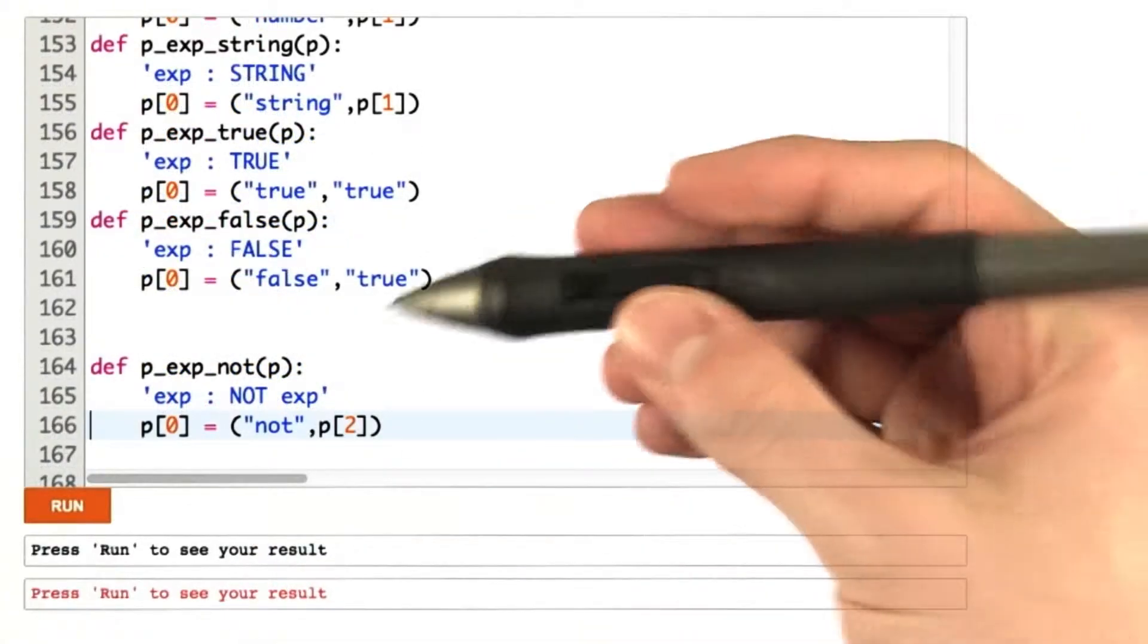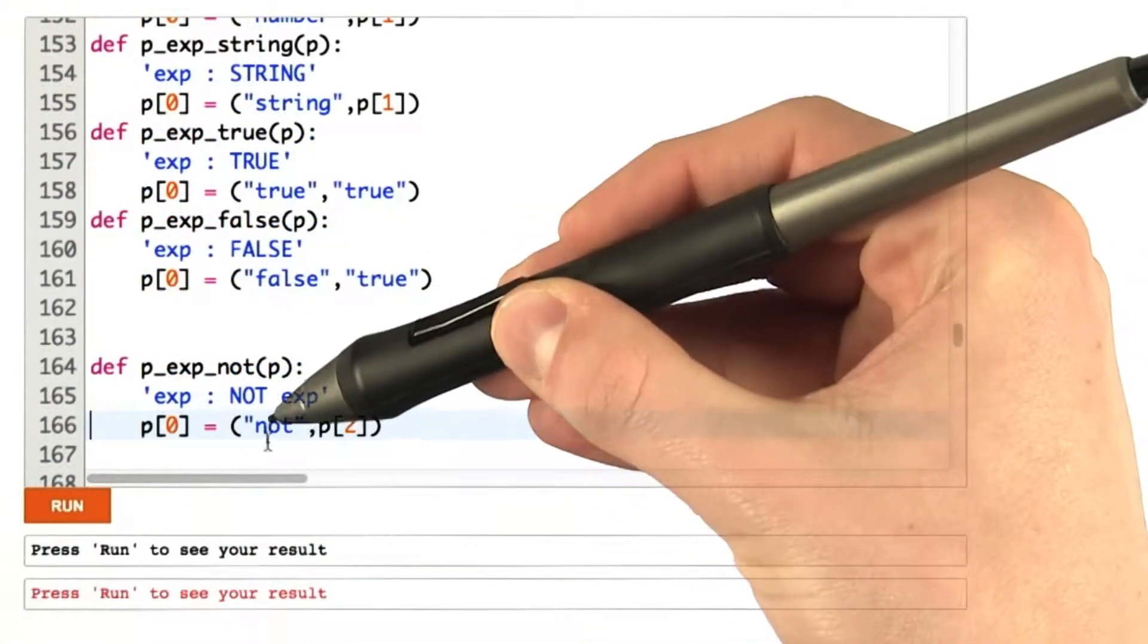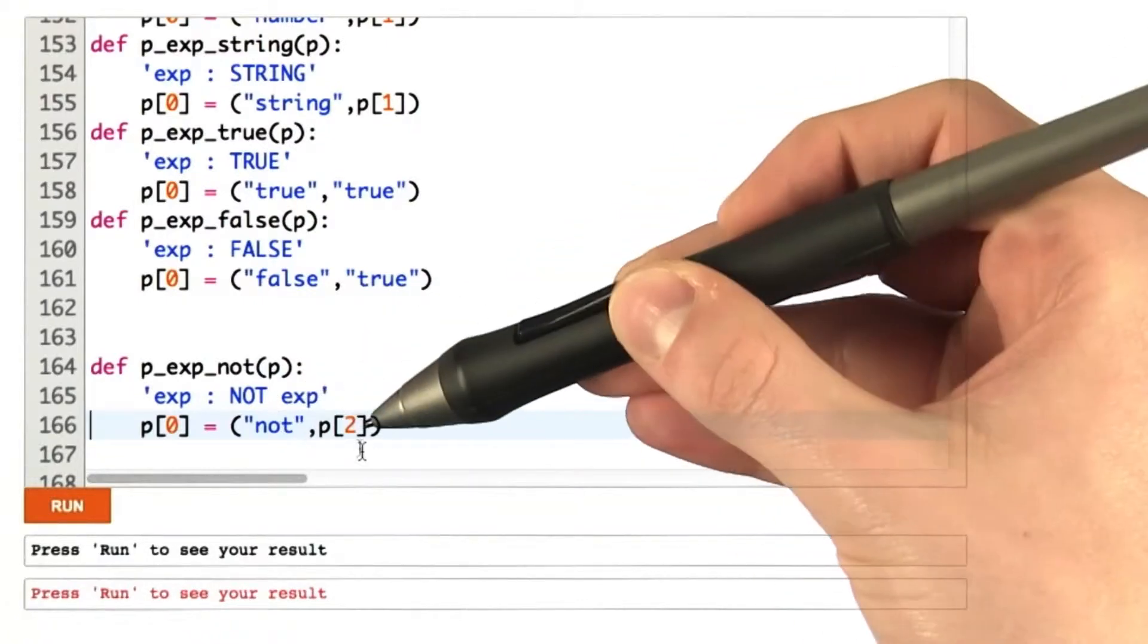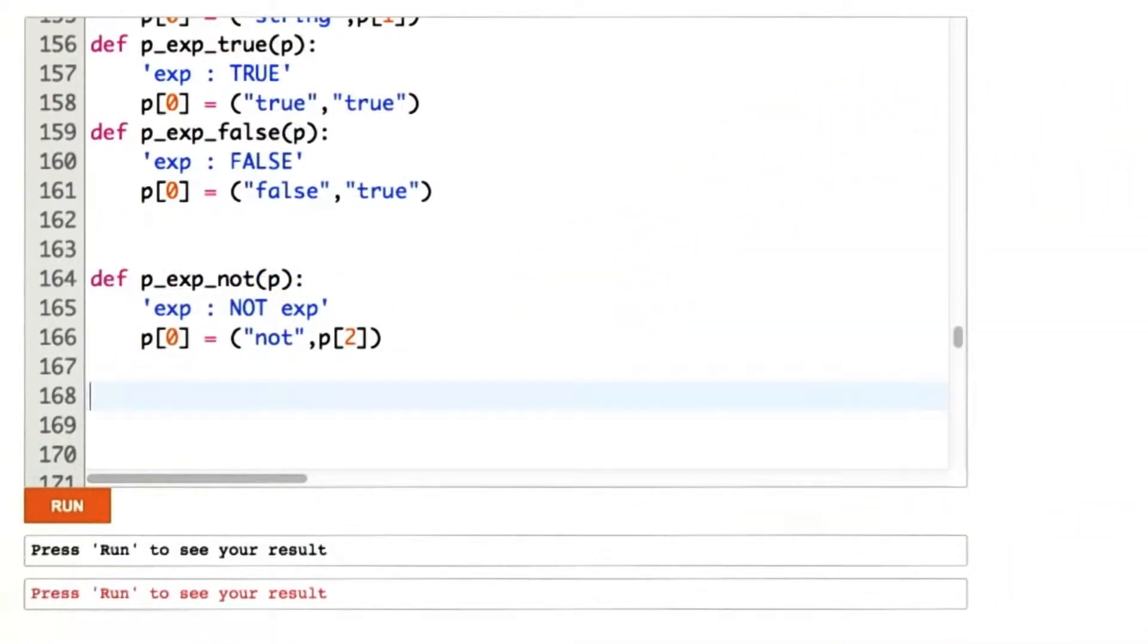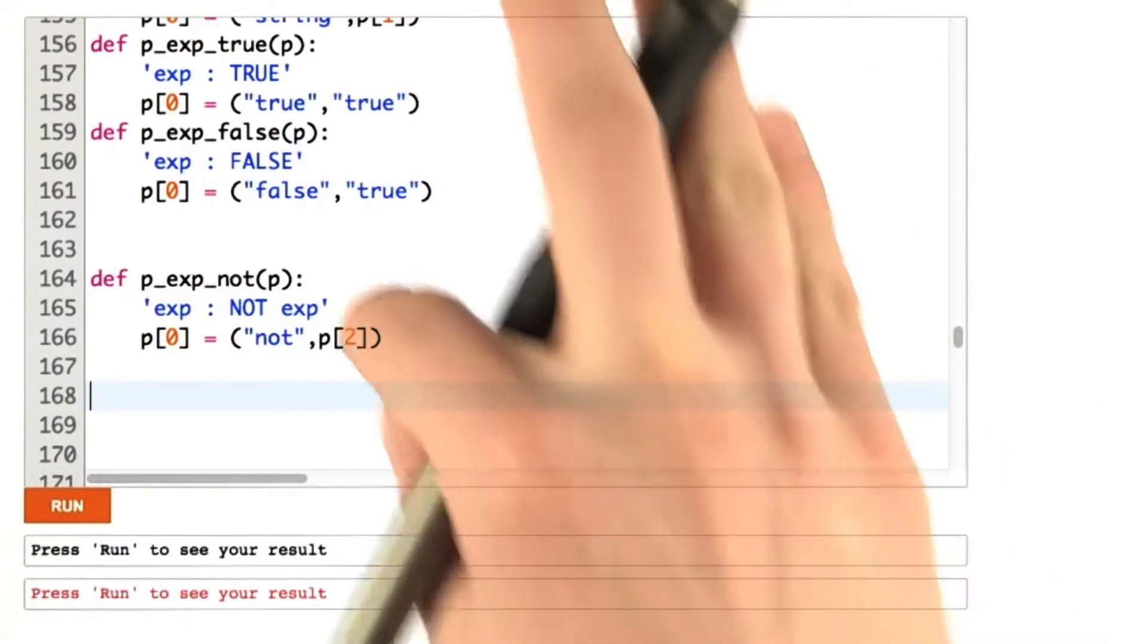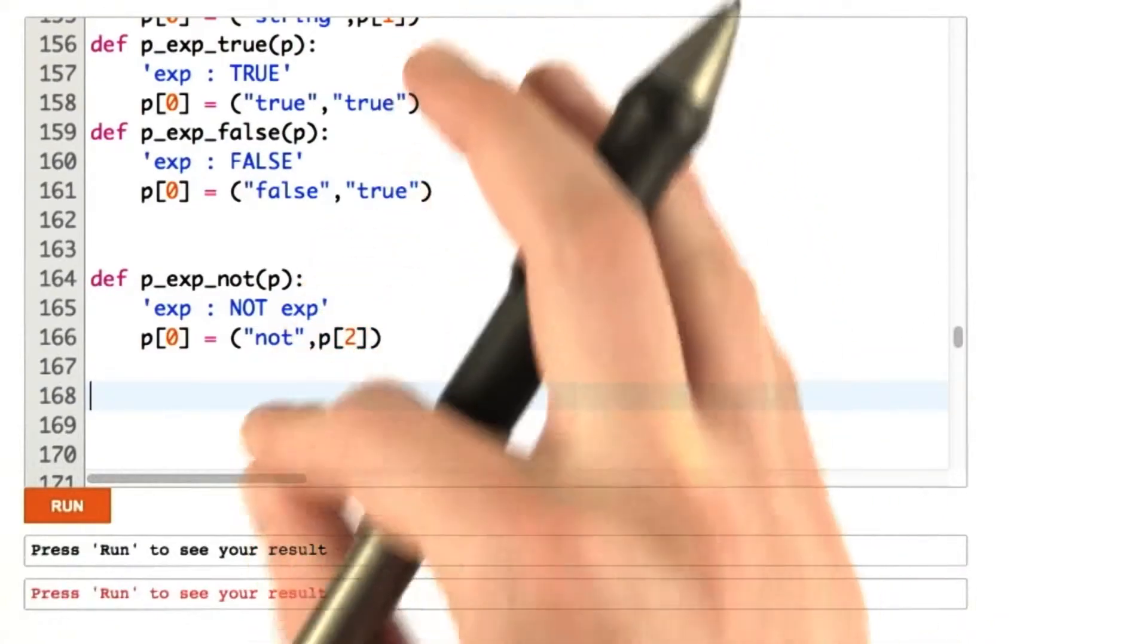If we see a NOT, then we simply have in our parse tree the word NOT, and then the contents that are being negated. Afterwards, we have about a dozen or so binary rules. Addition, subtraction, times, modulus, division, etc. And to save some time, I could enumerate each function, but I'm going to take a shortcut.